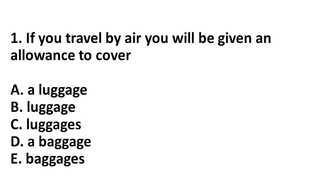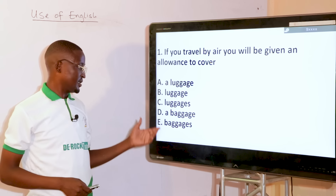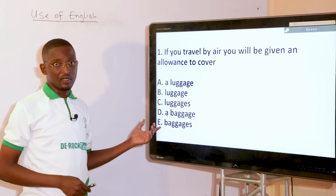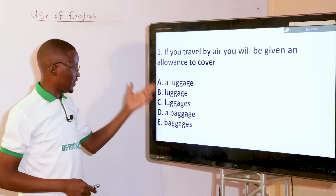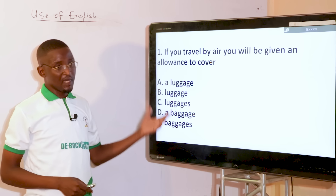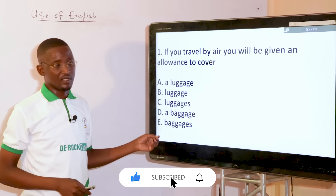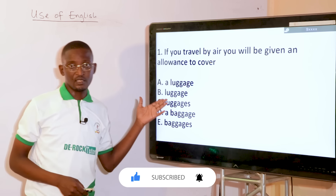If you travel by air, you will be given an allowance to cover dash. The options are: a luggage, luggage, luggages, a baggage, baggages. The answer is luggage because it is already a plural word — you don't have luggages. Words like furniture, luggage, baggage, and equipment don't need S to be plural; they are already plural. So the answer is: you will be given an allowance to cover luggage — option B.